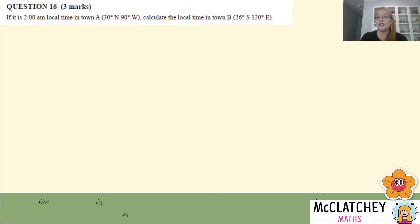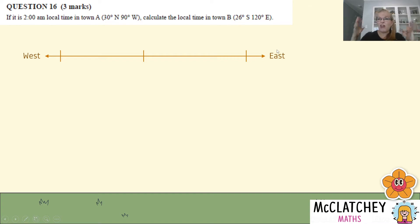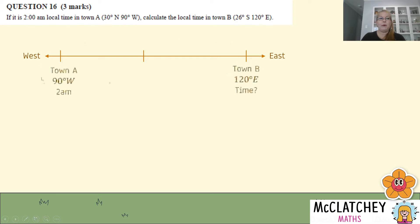Let's get straight into our first earth geometry question that was on the paper — Question 16, worth three marks. If it is 2 a.m. local time in Town A, given its coordinates, calculate the local time in Town B, given its coordinates. The first thing we're going to do is sketch out what's really going on here. We know one town is in the west and the other is in the east, so Town A goes on the left and Town B on the right, and it's 2 a.m. in Town A.